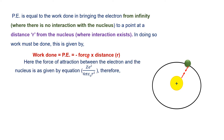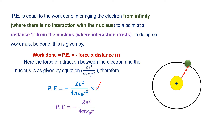The force here is the force of attraction between the electron and nucleus, which we already calculated according to Coulomb's law: ze² divided by 4πε₀r². Putting this value of force in the above equation, potential energy equals minus ze² divided by 4πε₀r², multiplied by distance r. Here one r from r² cancels out, giving us potential energy equal to minus ze² divided by 4πε₀r.